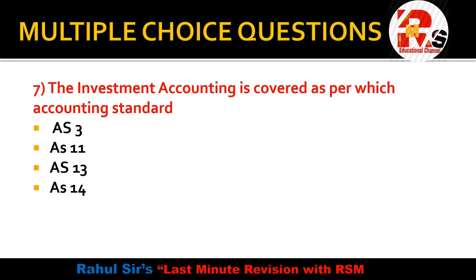Question number 7: Investment accounting is covered as per which accounting standard — AS-3, AS-11, AS-13, or AS-14? You need to keep all accounting standards revised. AS-3 is cash flow statement, AS-11 is foreign currency transactions, AS-13 is investment accounting, and AS-14 is amalgamation. So the right answer is AS-13.